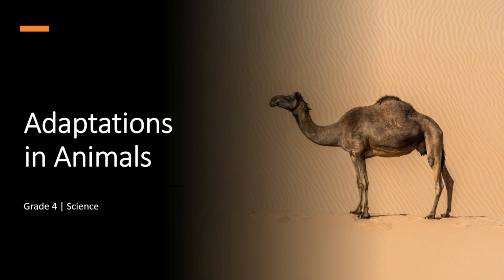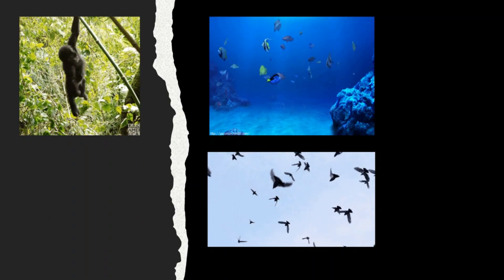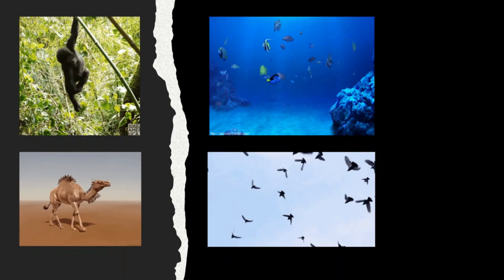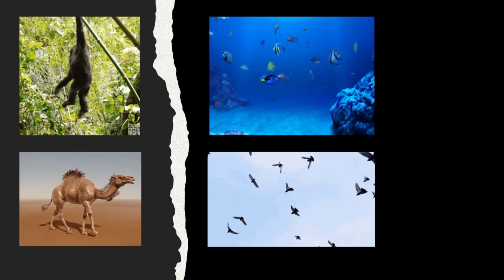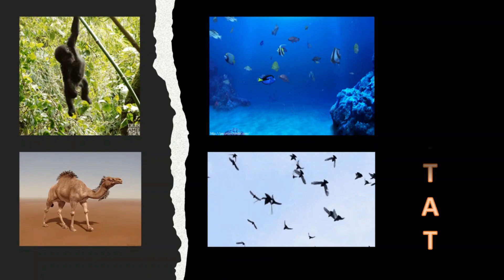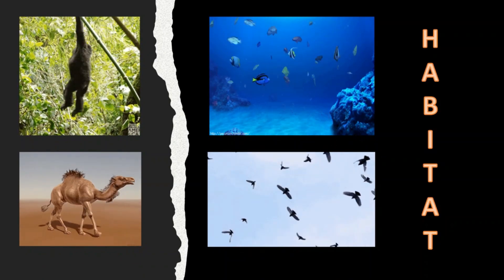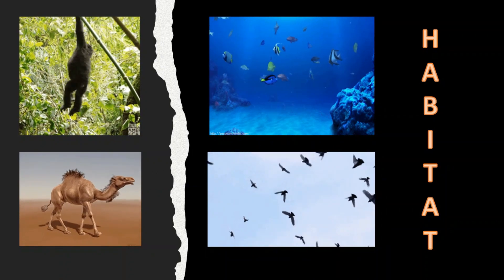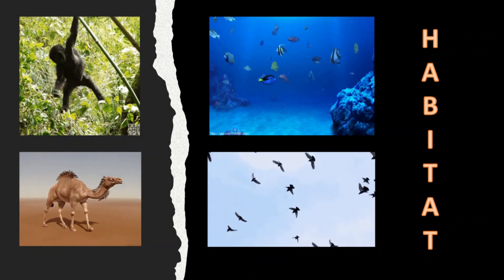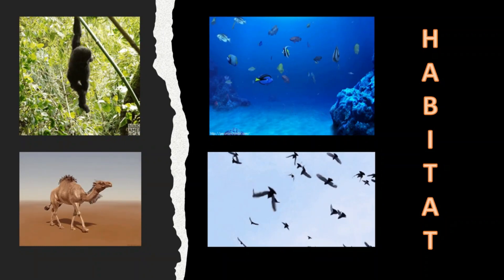Hello students and welcome to this video on adaptations in animals. When we look around us, we see birds flying in the sky, monkeys jumping on trees, fish in water, camels in a desert and so on. All these animals live in their natural homes which are called their habitat. Different animals live in different habitats. For example, the habitat of a camel is a dry sandy desert and that of a tiger is a dense forest.